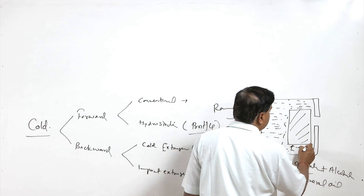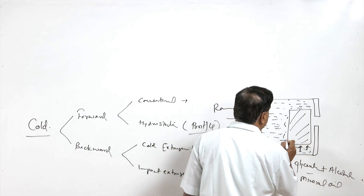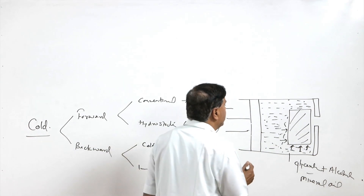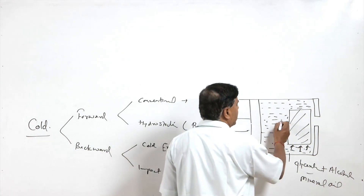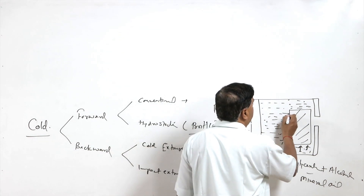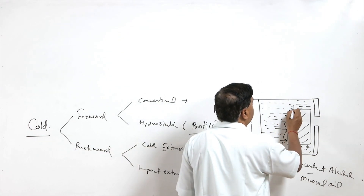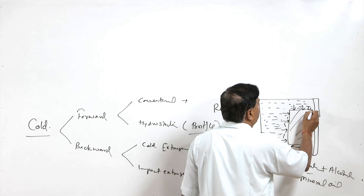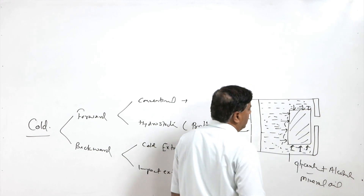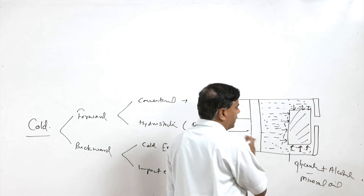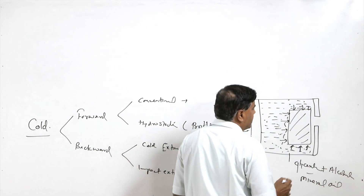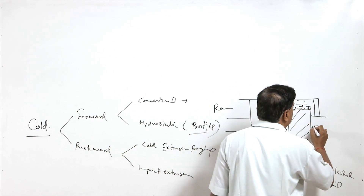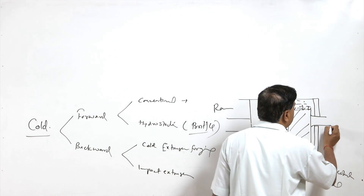The advantage of applying pressure through the fluid is that pressure acts uniformly onto the material from all sides and is not acting from only one side. This facilitates the flow of metal through the die.